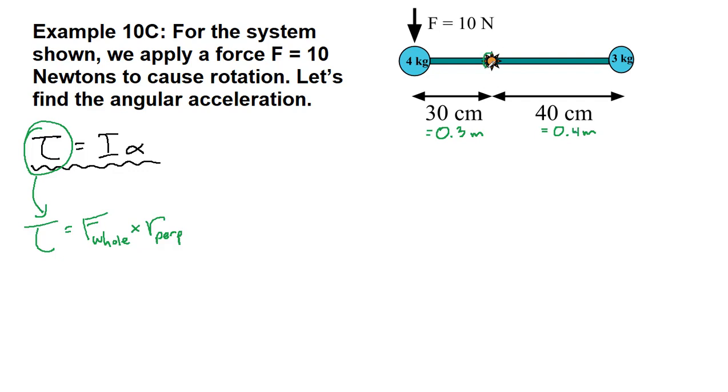This 30 centimeters is 0.3 meters, and this 40 centimeters is 0.4 meters. I'll go ahead and convert those right away. This is our axis. So in terms of the torque that we are currently applying, we are only pushing on one spot. That force is 10 newtons of force, and that force is being applied 0.3 meters from the axis.